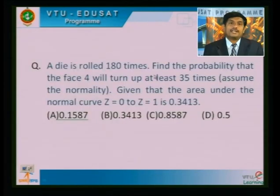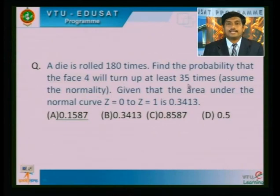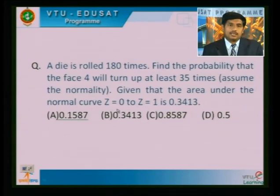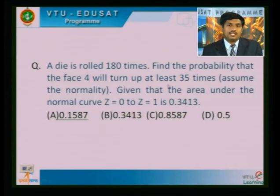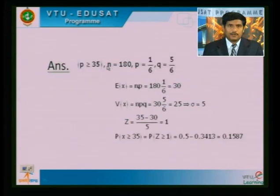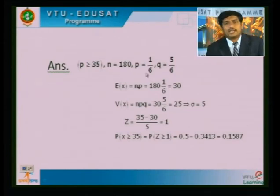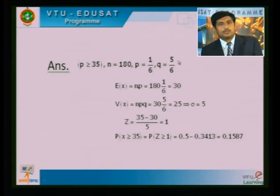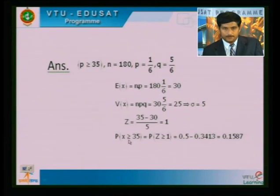A die is rolled 180 times. Find the probability that face 4 turns up at least 35 times, given that the area under the normal curve from z = 0 to z = 1 is 0.3413. Here n = 180, p = 1/6, q = 5/6. Expectation = np = 30, variance = npq = 25, so standard deviation = 5. We compute P(X ≥ 35) using the normal approximation and obtain the result.